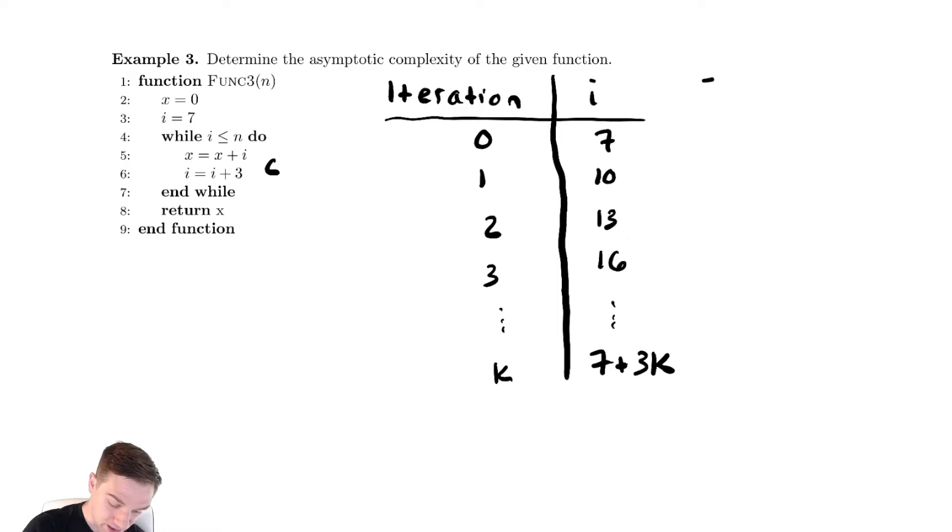So we can figure out when does the value of i, if we're being precise, we want to know when does that exceed our stopping condition. Because our stopping condition is less than or equal to n, we want to know when do we finally pass the threshold to being greater than n. For practical purposes, we'll only ever be off by 1 if we set it equal. So we're going to set this equal to n.